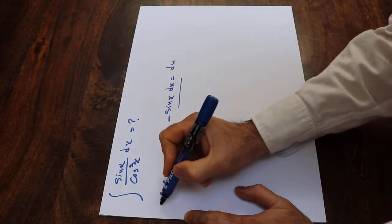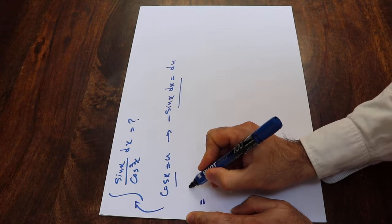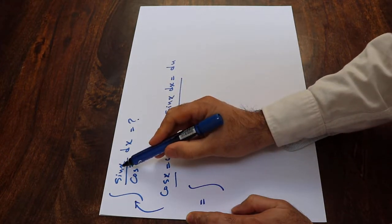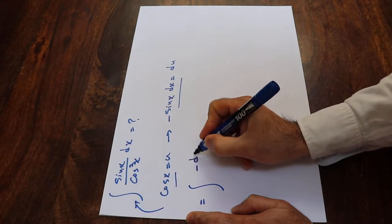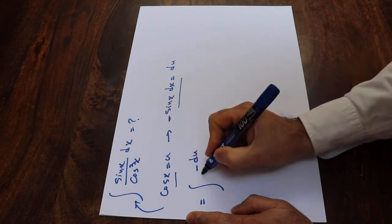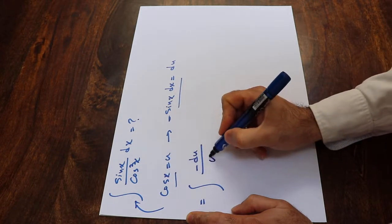Now you need to substitute these two expressions into this integral. Therefore, you can rewrite this integral as the integral of—instead of sine x dx, you see here I have sine x dx—I simply write minus du, because there is a minus sign here, divided by, instead of cosine x, I write u, therefore this will be u cubed.